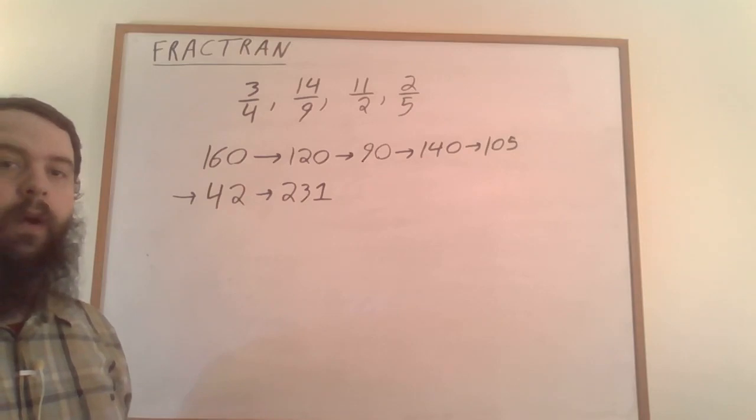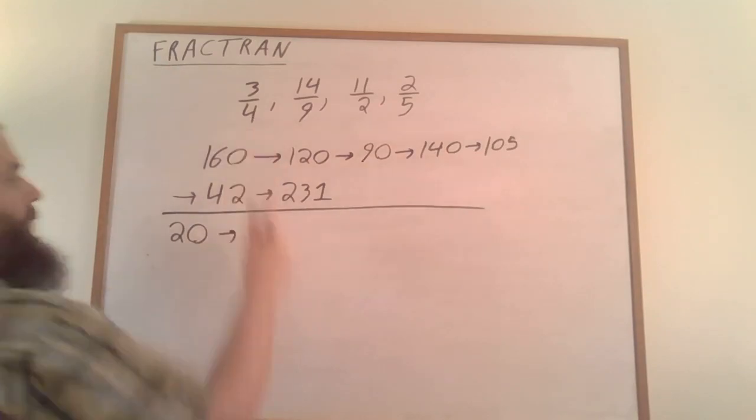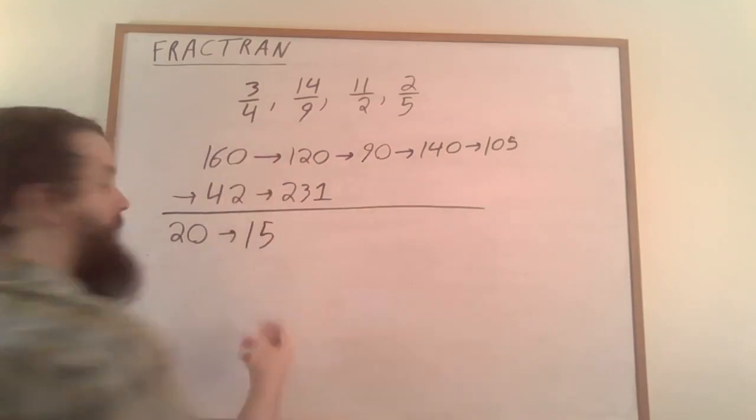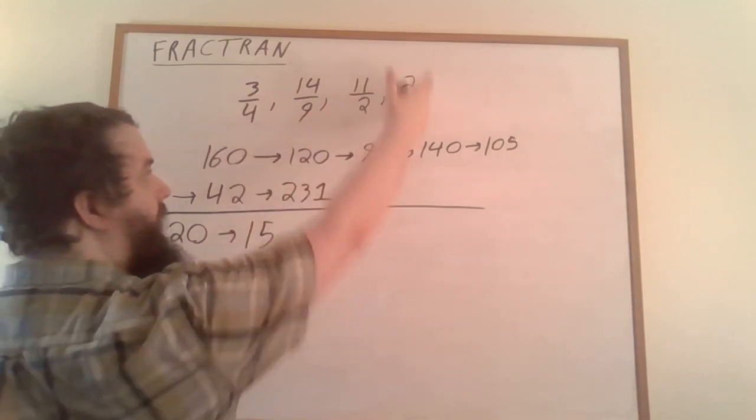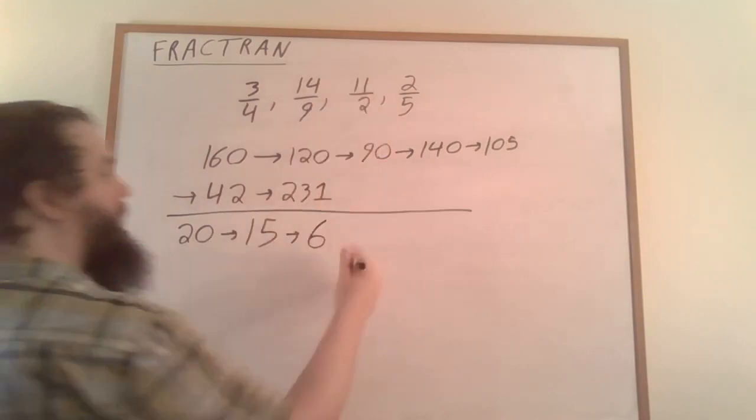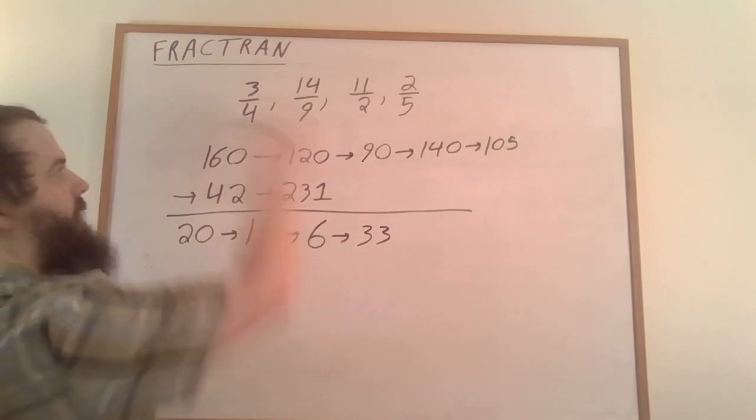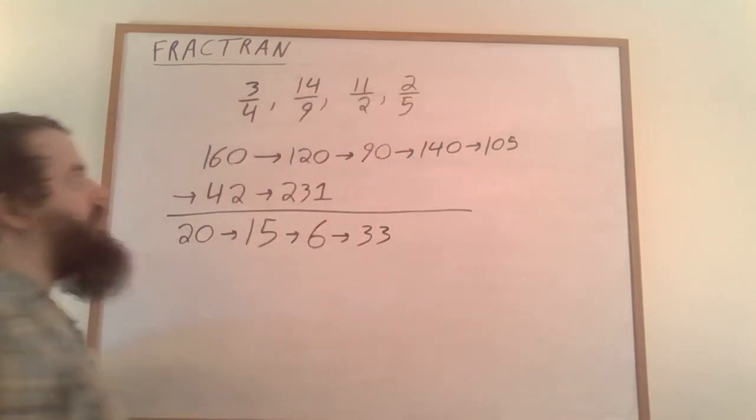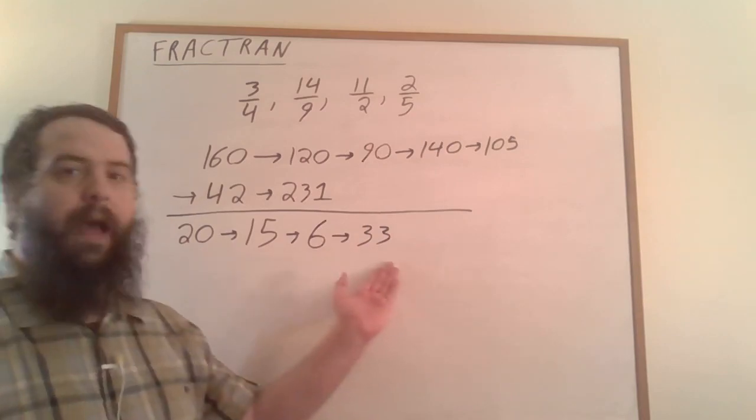Let's try another input. What if we input 20? That can be multiplied by 3/4 to get 15. 15 can only be multiplied by 2/5. Then we can multiply by 11/2 to get 33, and now we can't multiply by any of these fractions. So on input 20, our program outputs 33.